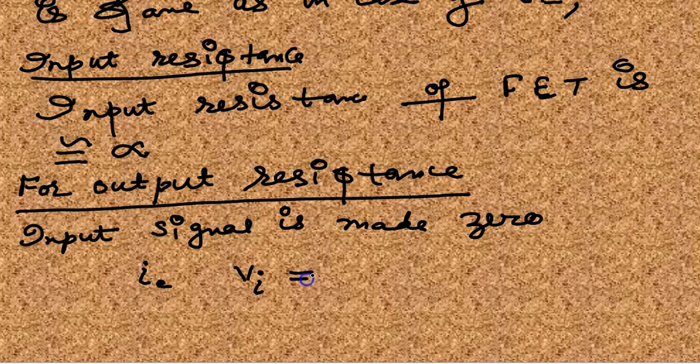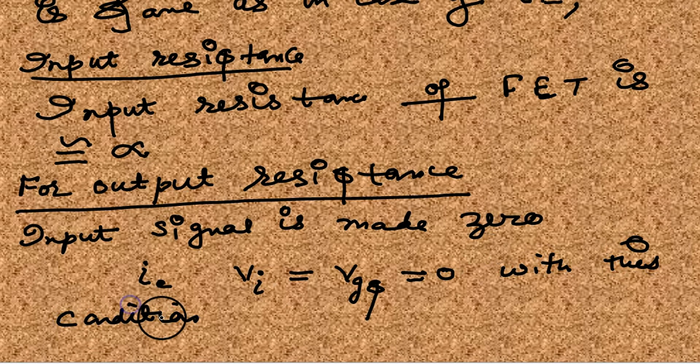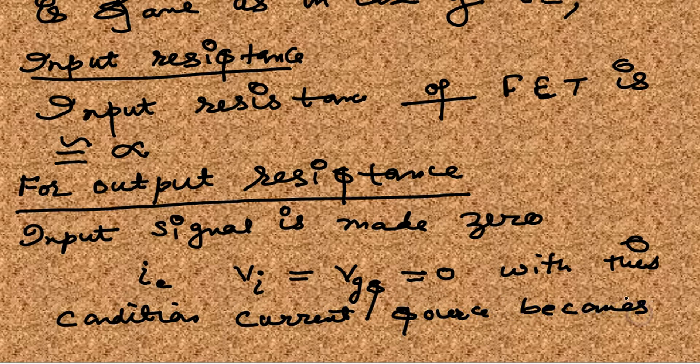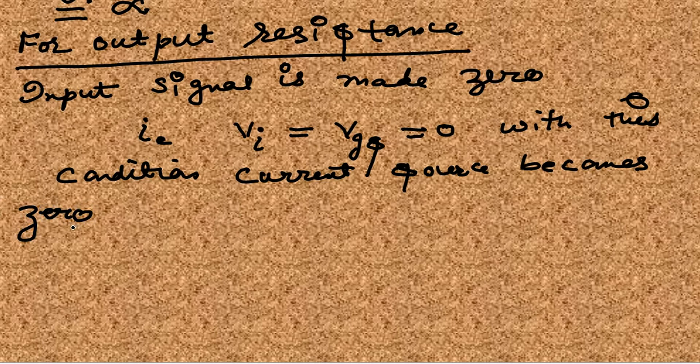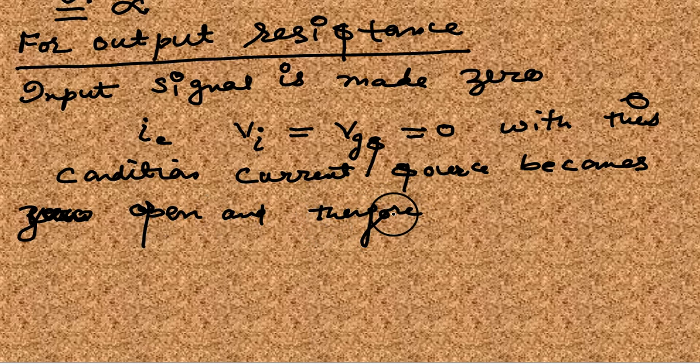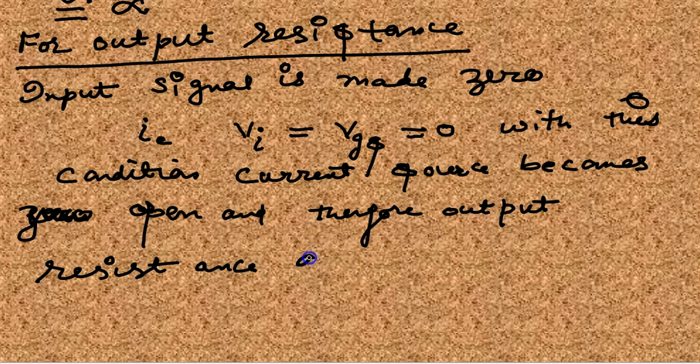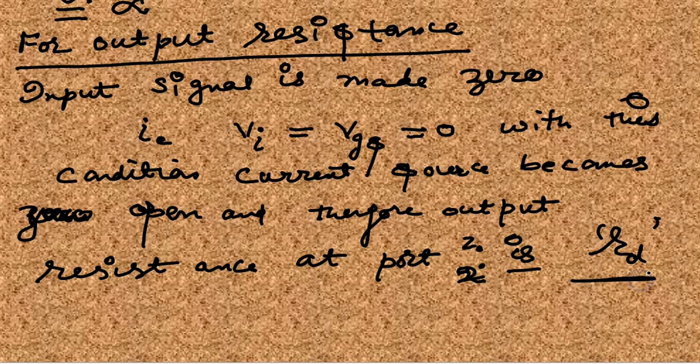For output resistance, input signal is made zero, that is VGS is zero. So if VGS is zero, that means current source becomes open. And therefore, output resistance at port two, output resistance of FET is zero.